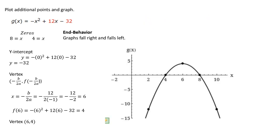With vertex at (6, 4), x-intercepts at 4 and 8, and y-intercept at negative 32, we can sketch an accurate graph. The graph is a downward-opening parabola whose vertex is 6 units right and 4 units up, crossing the x-axis at x equals 4 and x equals 8, and crossing the y-axis far below at negative 32. On the computer, these problems are multiple choice, making them easier to solve.